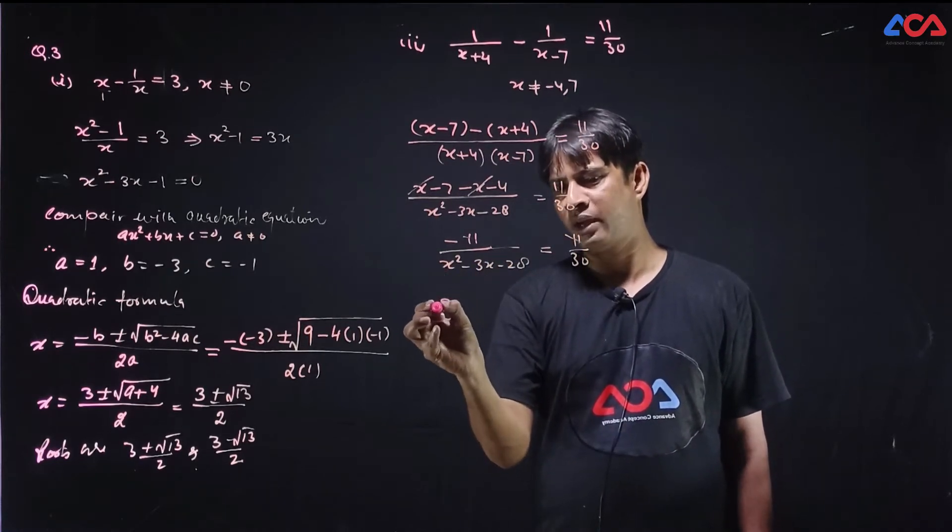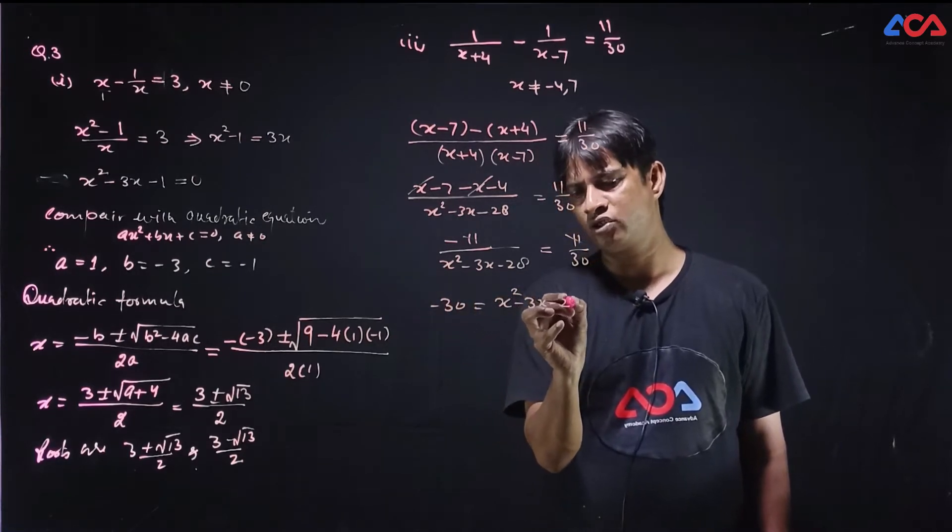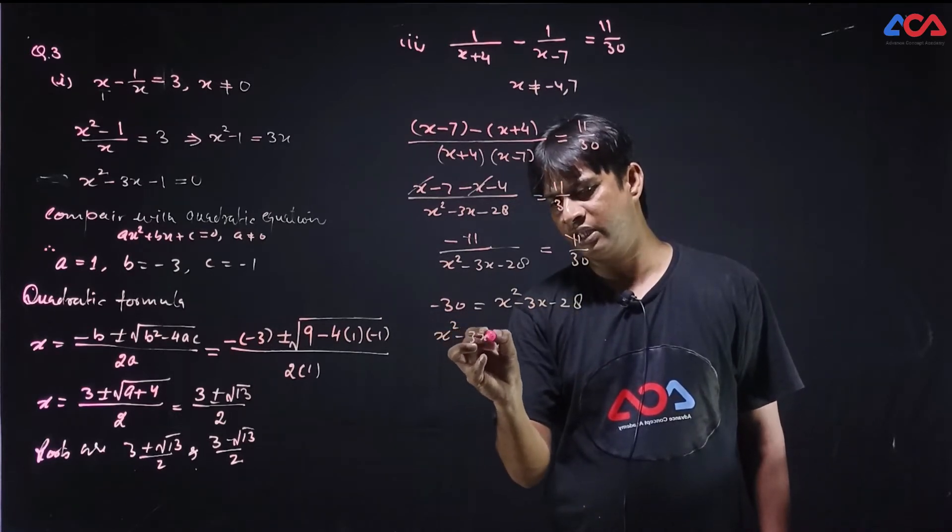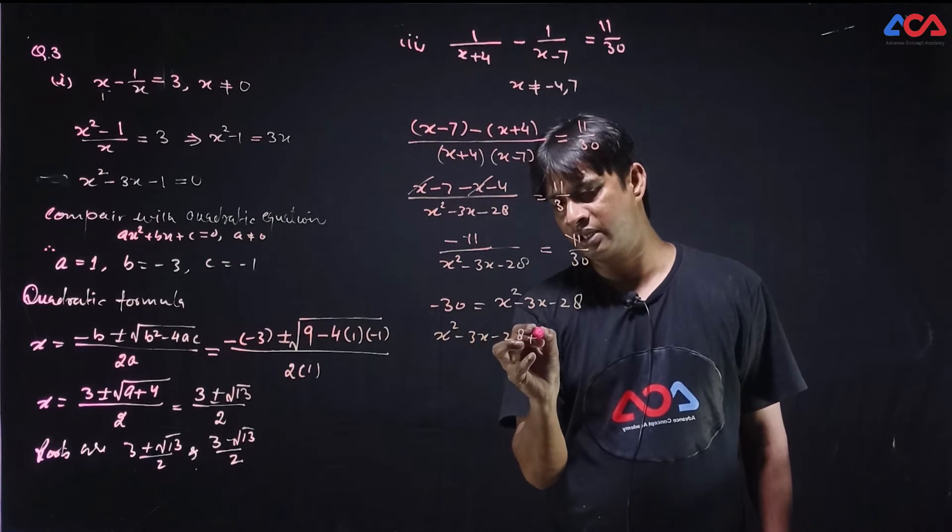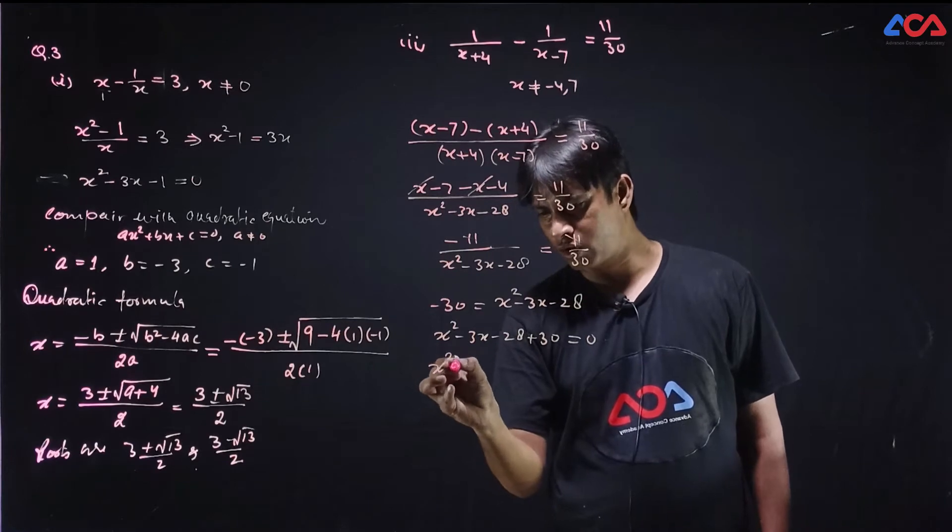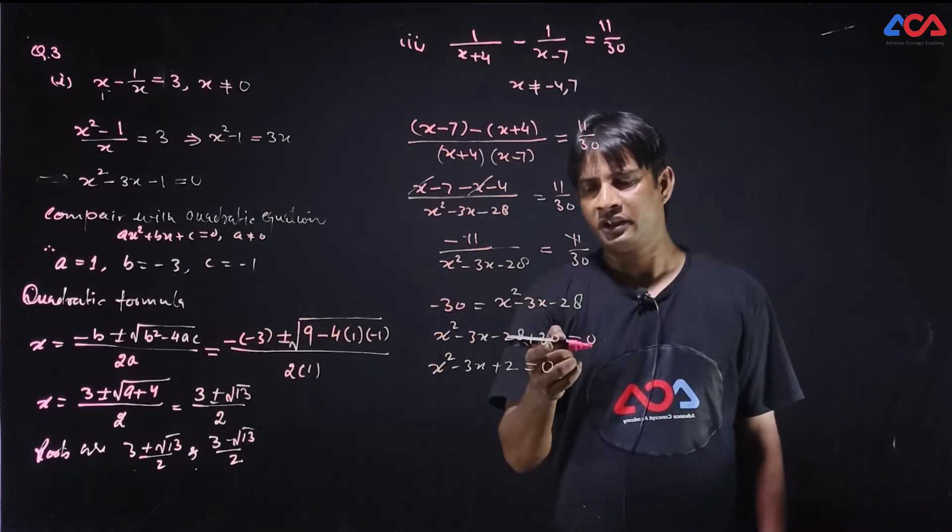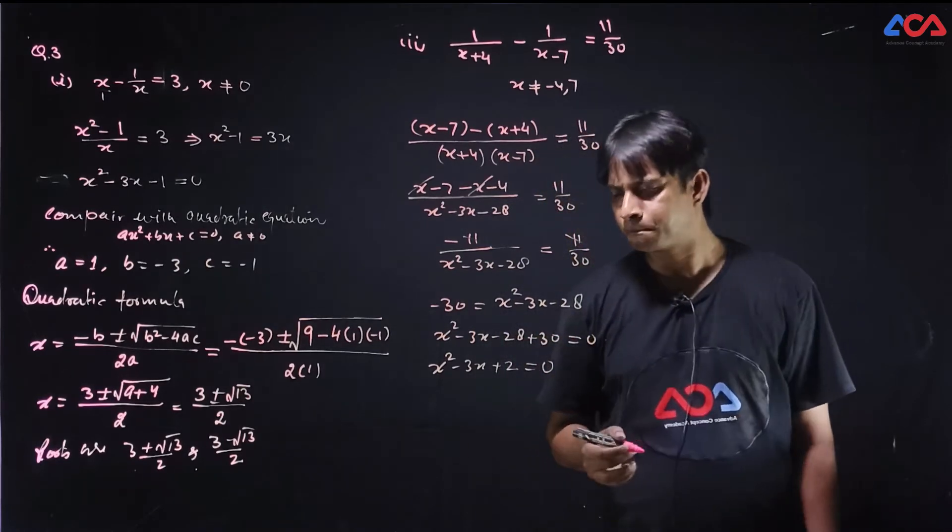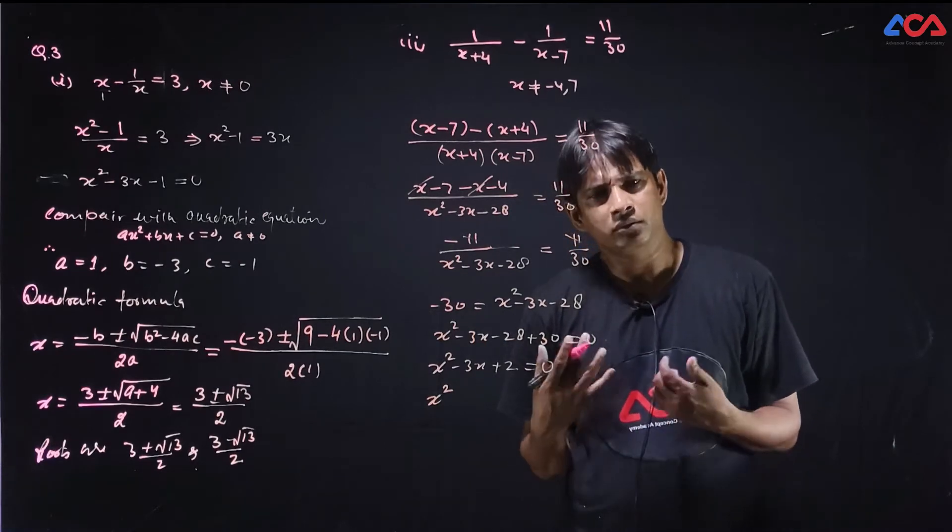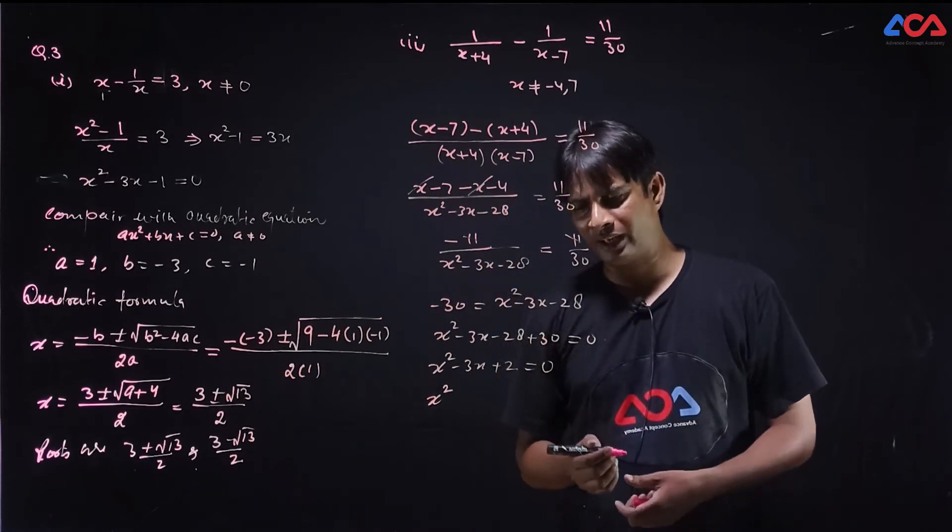Cross multiply. Minus 30 which is equal to x square minus 3x minus 28. Then x square minus 3x minus 28 plus 30 which is equal to 0. Then x square minus 3x plus 2 which is equal to 0. So from 30 to 28 minus, 2 will be left. We can factorize it better. We have used the correct formula here. I am solving it with factorization.